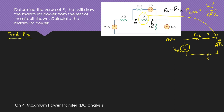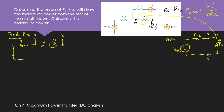First aim is to find RTH. You need to turn off all independent sources, so the voltage source becomes a short circuit — you have 3 ohms here. Remove the load RL. You have terminal A, then 2 ohms, and the 10-volt source which you need to turn off. Then you have resistor 5 ohms, and turn off the current source by open-circuiting it. This gives you R equivalent which equals RTH, looking from terminals A and B.